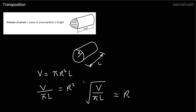And just looking at this a bit more — if we had to make l the subject, well all of pi r squared is multiplying l, so you simply move the whole lot to the other side and divide by it. So V over pi r squared equals l.